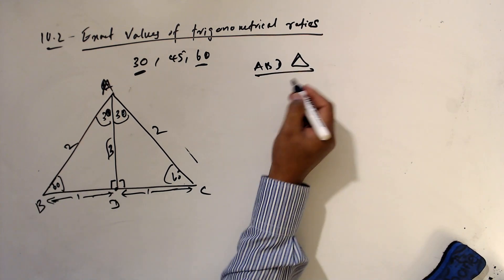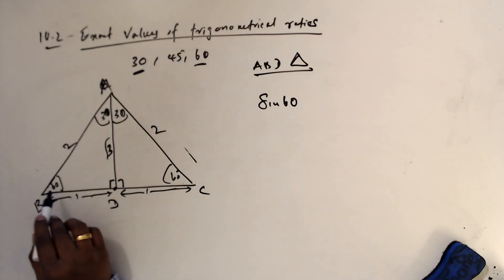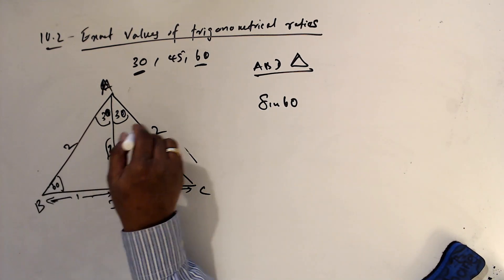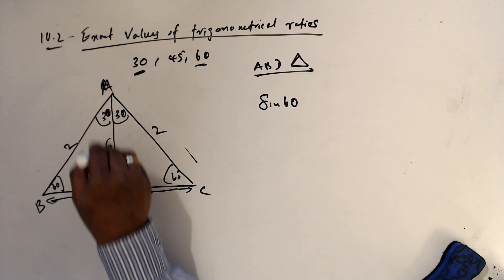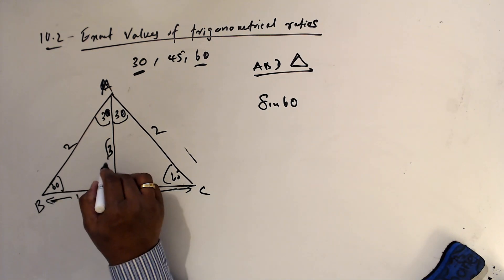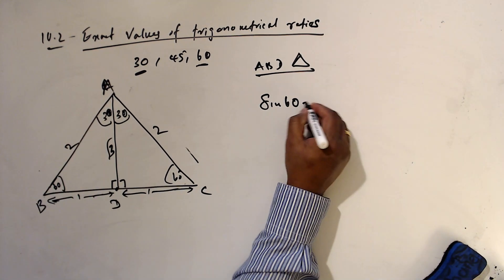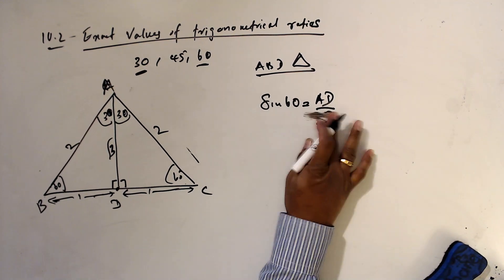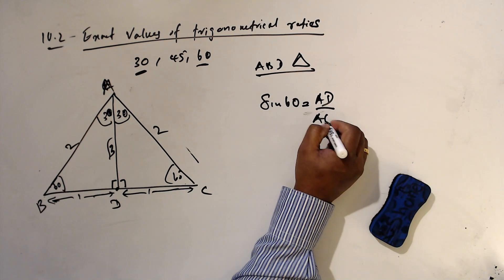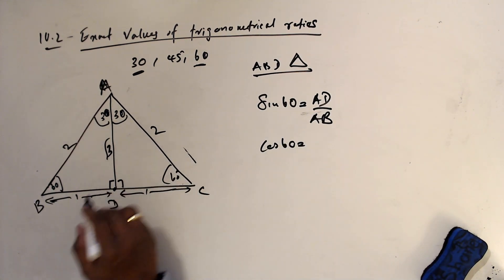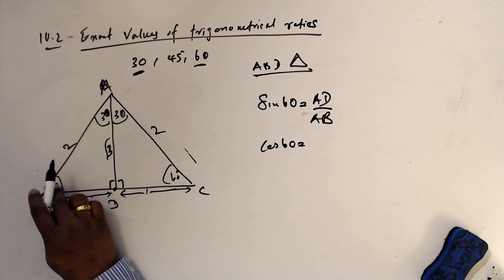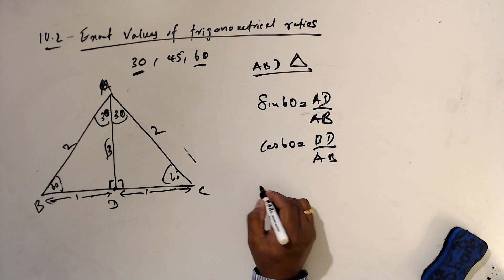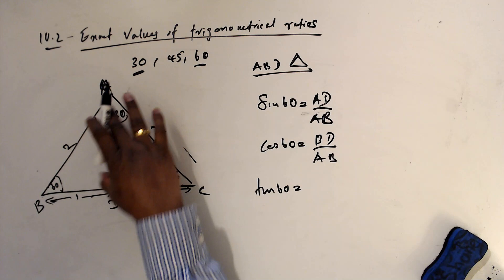So the height AD is √3. Now for sin 60°: standing at angle 60° and looking at this direction, AD is the opposite side, BD is the adjacent side, and BA is the hypotenuse. Sin 60° means opposite over hypotenuse — AD divided by AB. Cos 60° means adjacent BD divided by AB. Tan 60° means AD divided by BD.